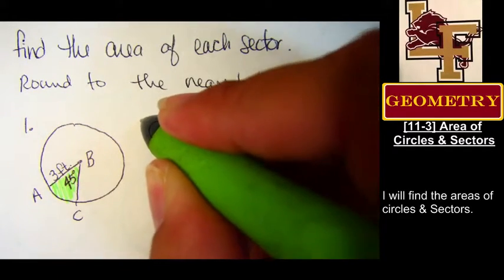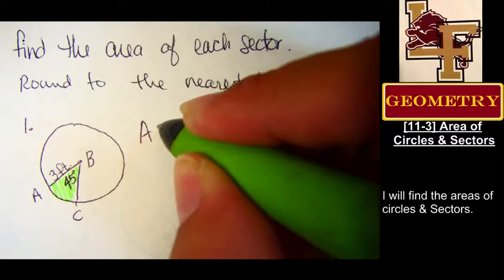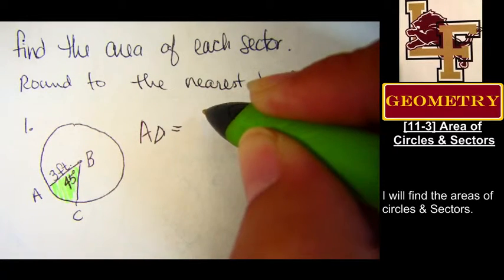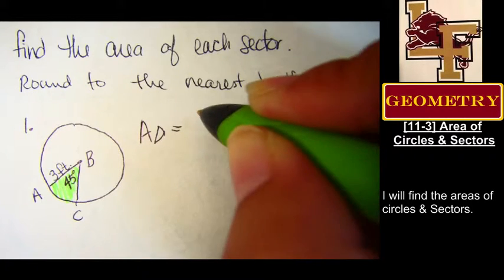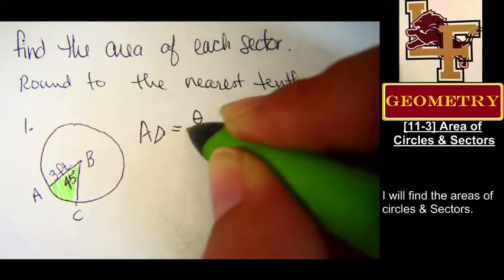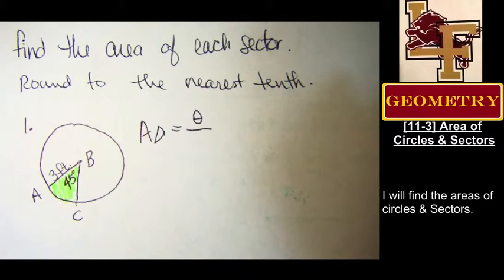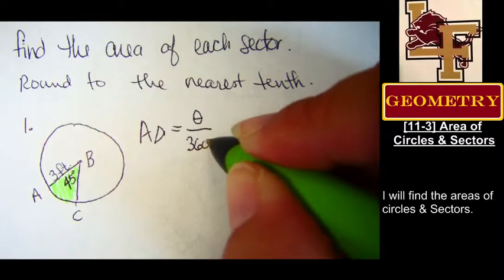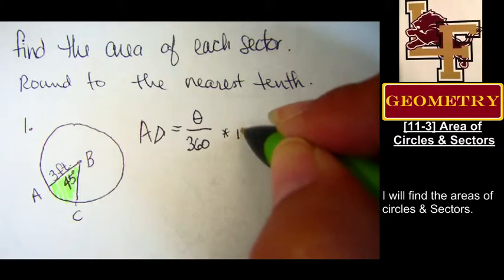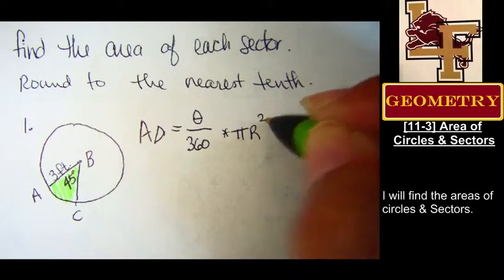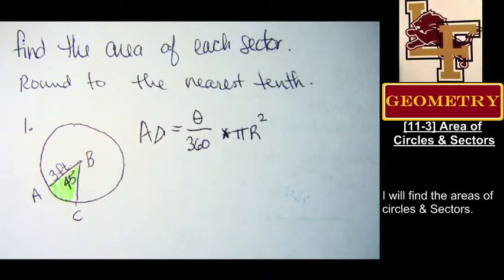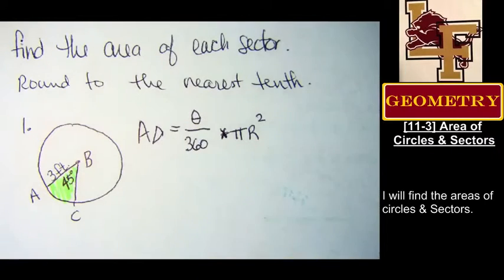All right, what's the formula for area of a sector? Area of a sector is theta, which is the measure of the central angle. So make sure it's got the little belt on it. Otherwise, it looks like a zero. Theta divided by 360 times the area of the circle. This is a times, and I'm making it look like a star, so you don't think it's an x.